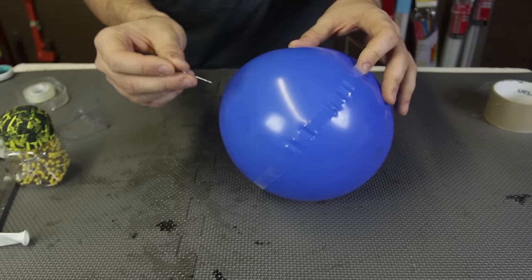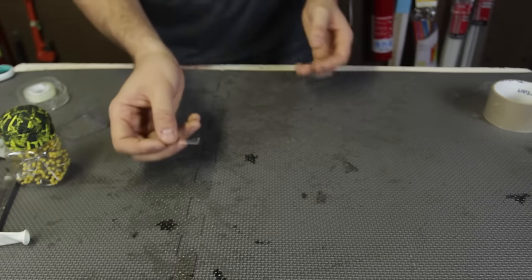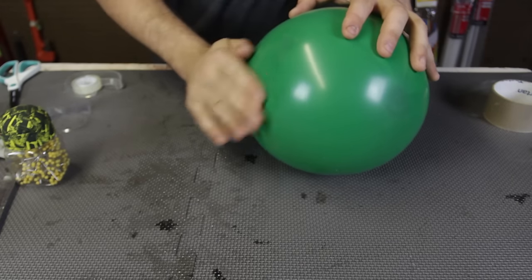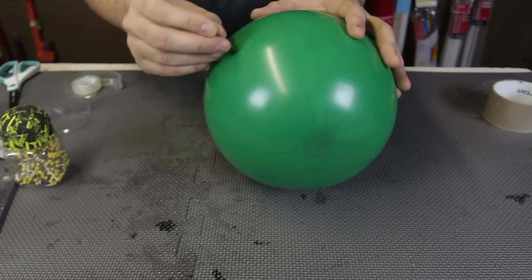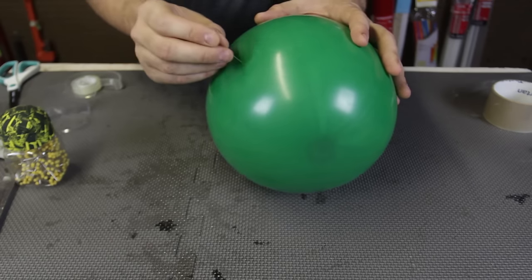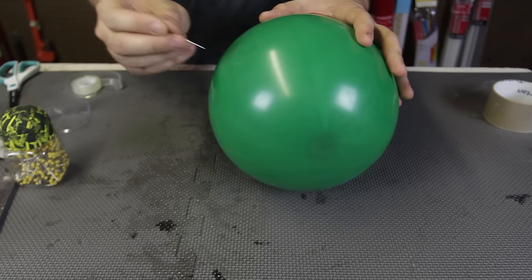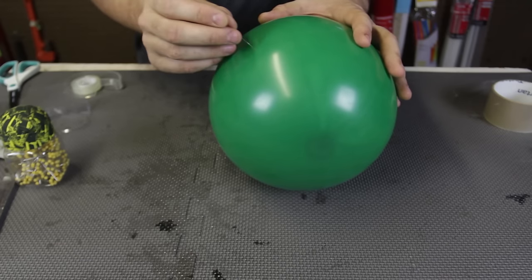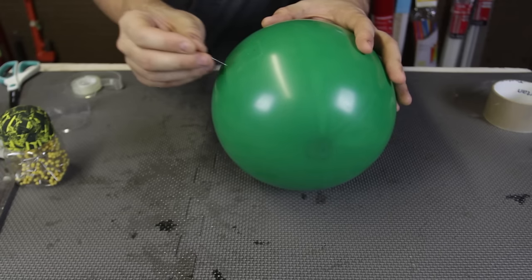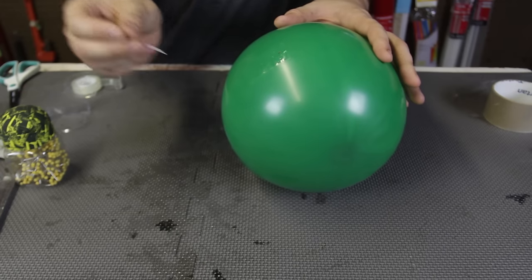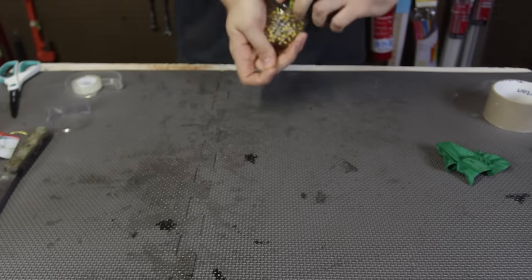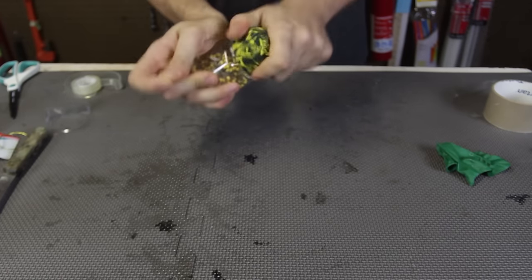And if you poke it without the tape, boom, it pops easily. Then we're going to need a little piece of tape. Here you go, boom. And look at it, it's not popping. This is a very cool trick you can show to your friends, and they'll be like, 'No way, what's happening?' And before they can see the tape, you can just pop the balloon. Pretty cool, huh? It's a fun cool experiment slash trick.